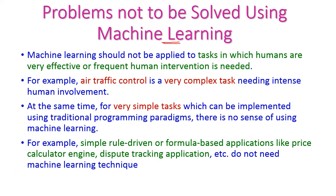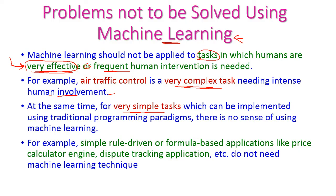Machine learning algorithms are not suitable for very complex tasks or very simple tasks. Some problems exist where humans are very effective and can easily solve them, making machine learning algorithms not at all useful there. In other problems, human involvement is very often required. For example, air traffic control is a very complex problem, and machine learning algorithms alone cannot solve it because human involvement is very frequently required. In such complicated problems, we cannot use machine learning algorithms.